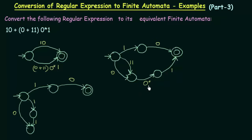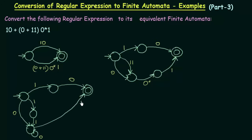Now what we have to do is handle the '0 closure'. Whenever you have a closure, what you do is very simple — just send a self-loop. So I will send a self-loop to this state with input '0'. This is what we do for '0 closure' and we are done with that. After that we have '1' following it, so from here we will send it to the final state on getting input '1'.